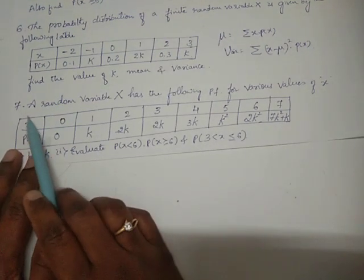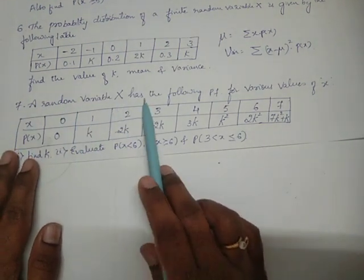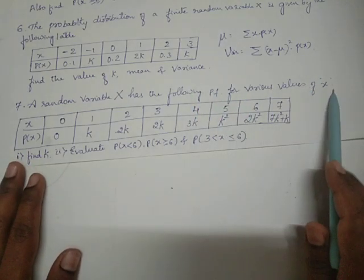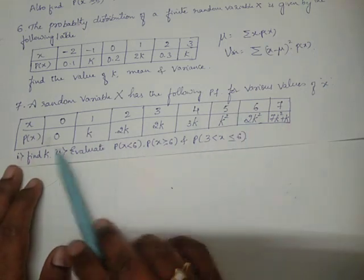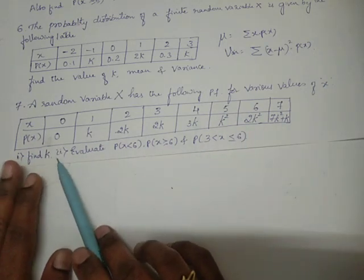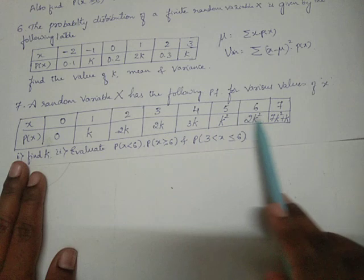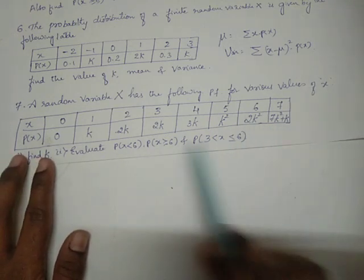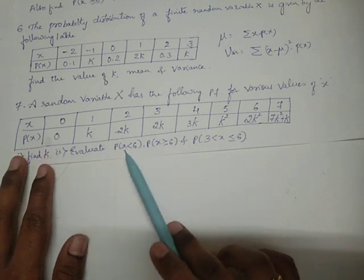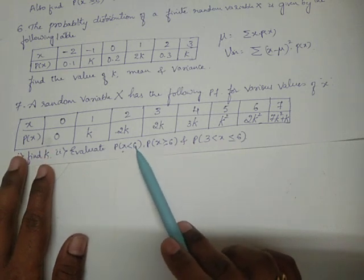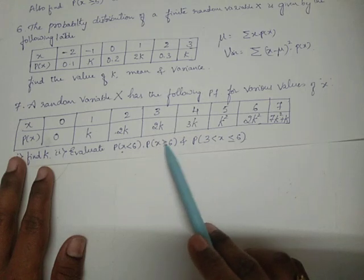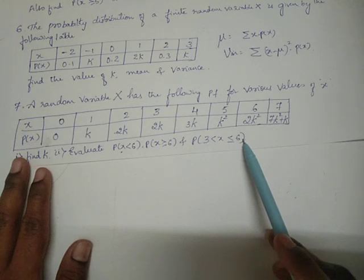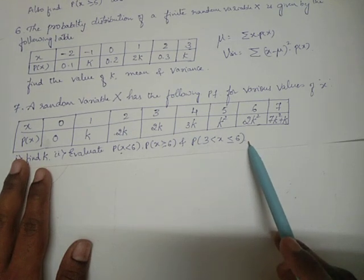Next, the seventh problem is: the random variable X has the following probability function for the various values of X. They have given this. Find the value of k - addition of all these things must be equal to 1, so find the value of k. And evaluate probability of X less than 6, probability of X greater than or equal to 6, probability of X from 3 to 6 including 6.